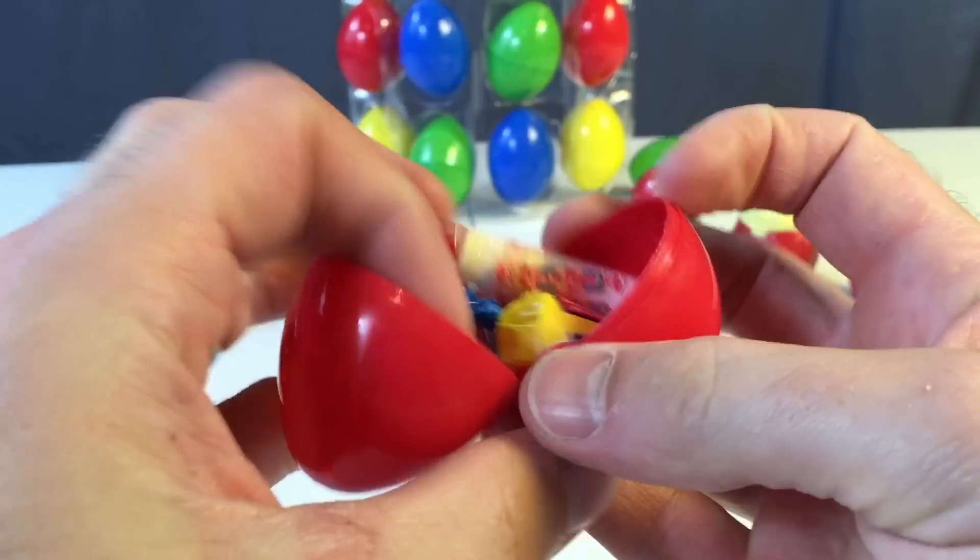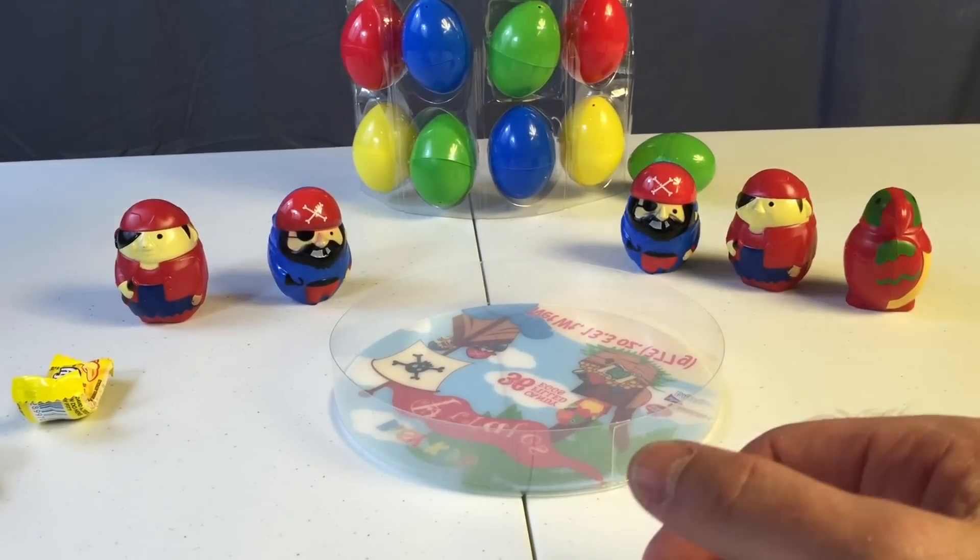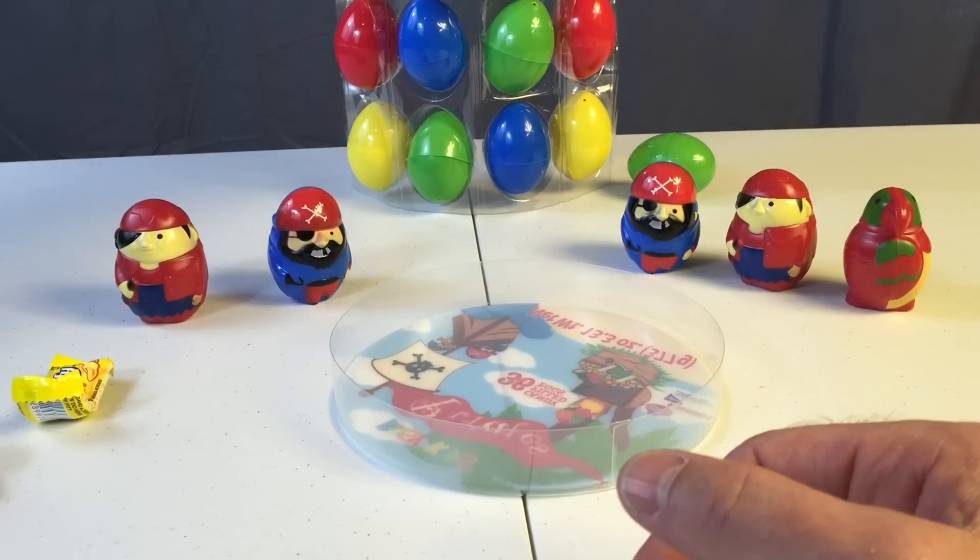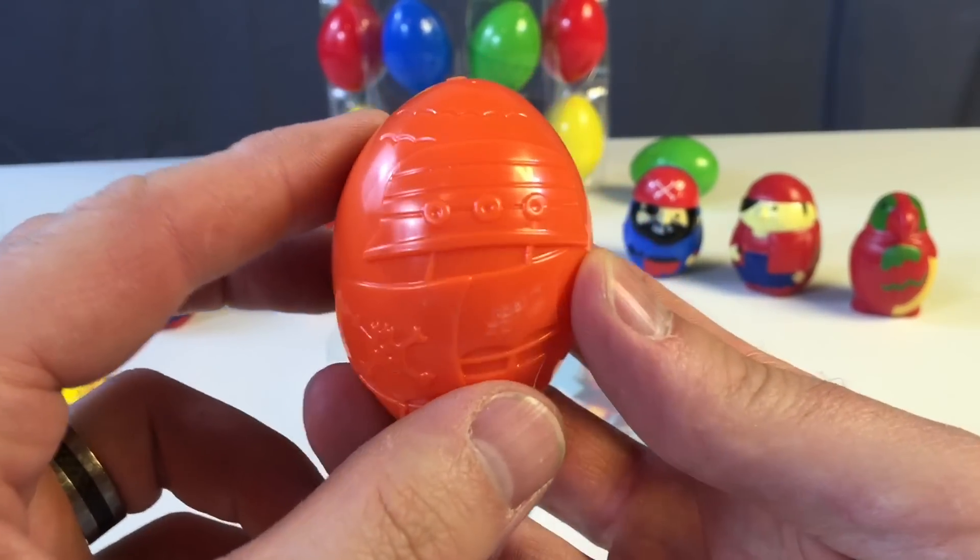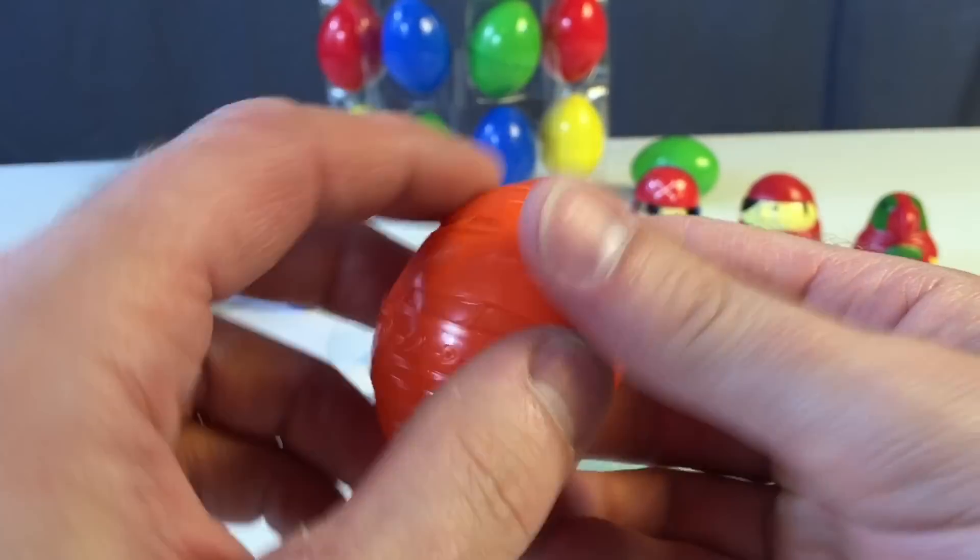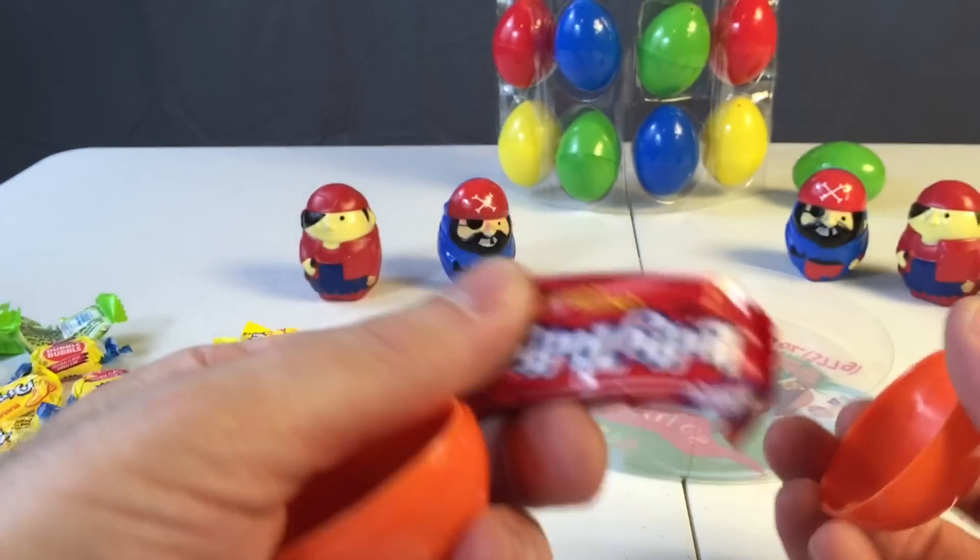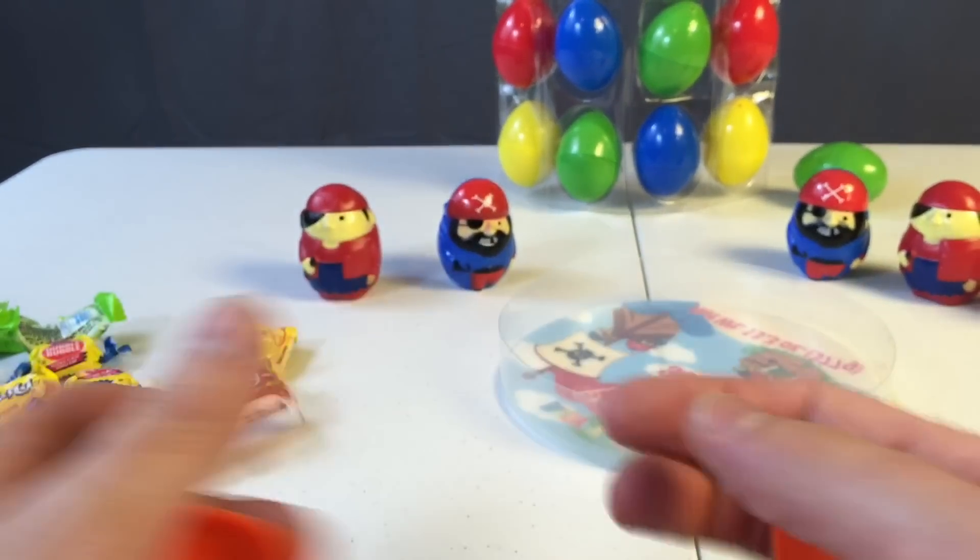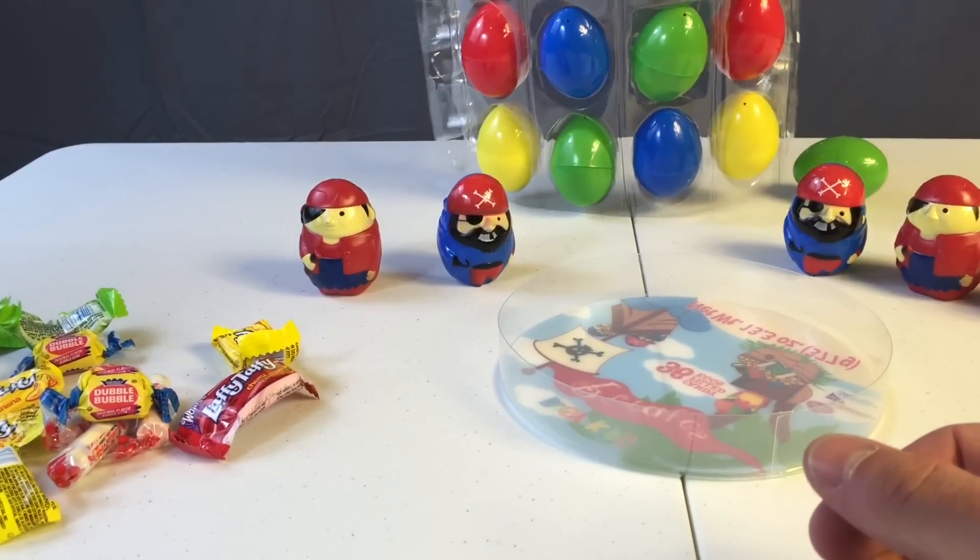This one's just a plain egg. Look, it's Laffy Taffy banana. And this one? Laffy Taffy cherry. Another pirate ship. Cool. Another banana. Oops, upside down. There we go. More cherry Laffy Taffy. Look, there's more cherry Laffy Taffy.